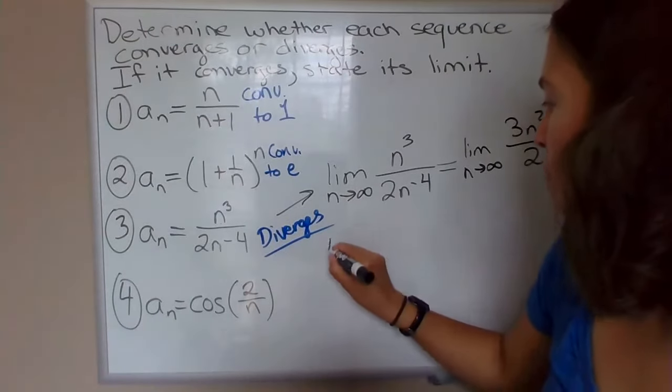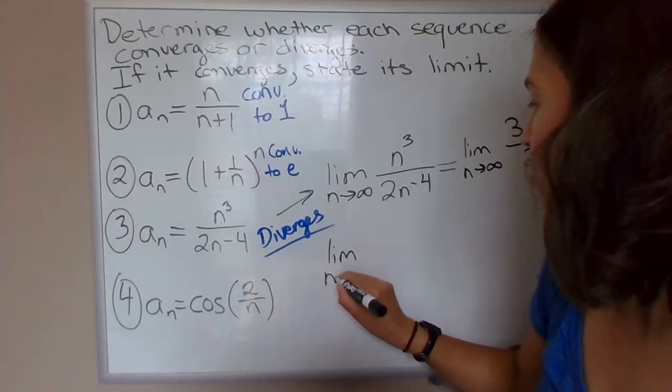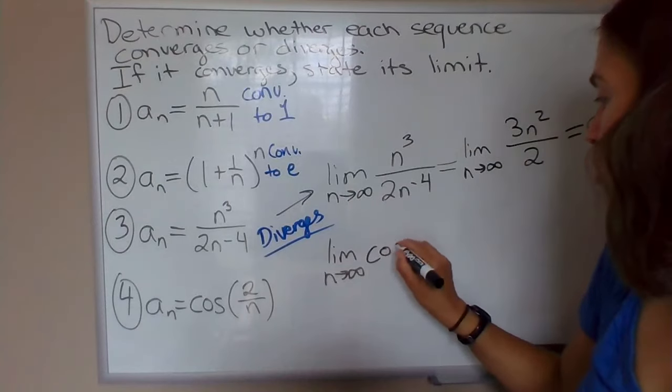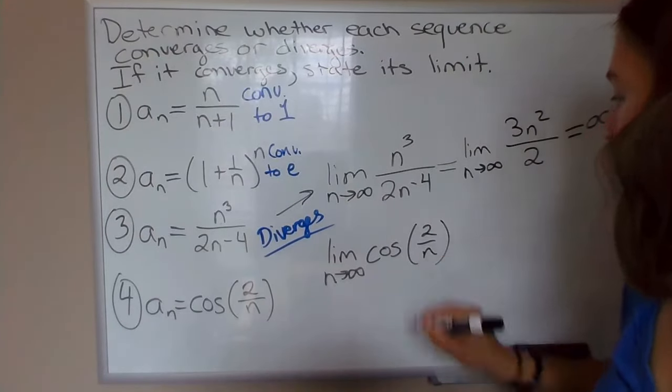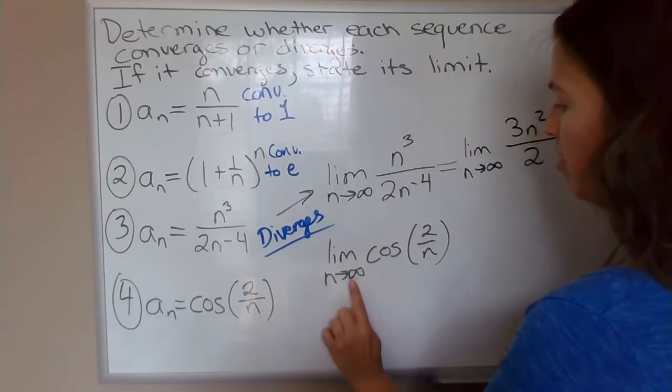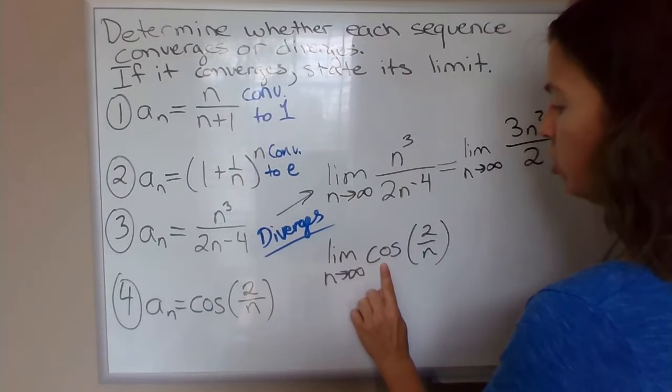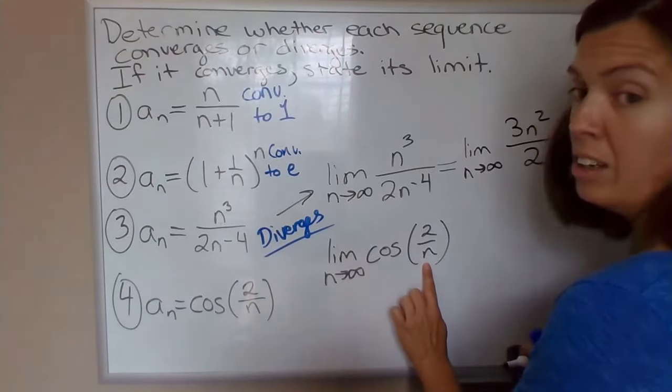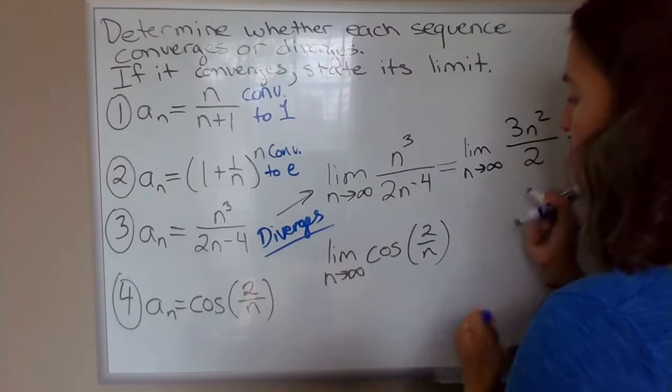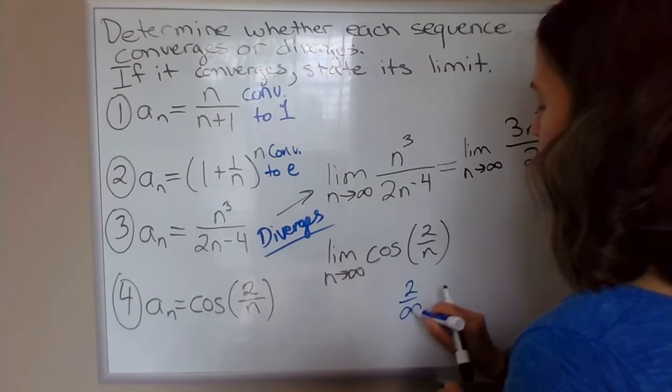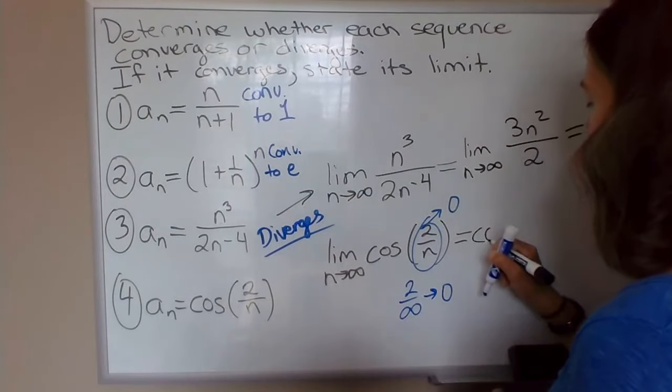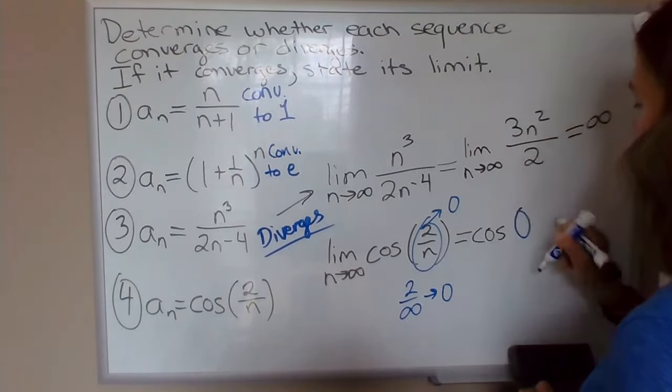Okay, last example, number 4 here. And I'm going to approach it exactly the same way. So this is how you determine whether a sequence converges or diverges for the most part. It's just take the limit of the terms. If the limit exists, it converges to that number. If the limit does not exist, then the sequence diverges. So in this case, cosine is a continuous function. So we're allowed to just move the limit inside here. Take the limit as n approaches infinity of 2 over n. So that's 2 over infinity, it's a finite number over infinity. That's going to approach 0. So this right here approaches 0. And this is equal to cosine of 0, which is 1.